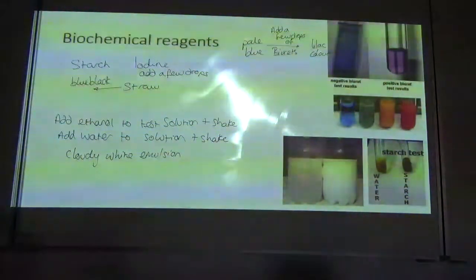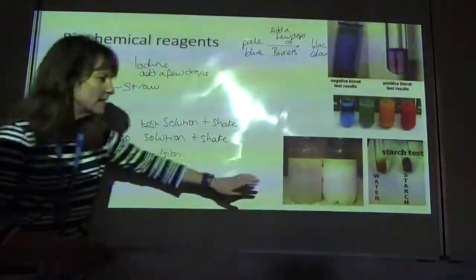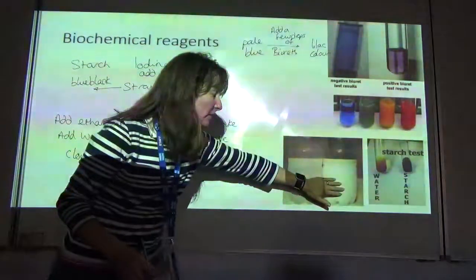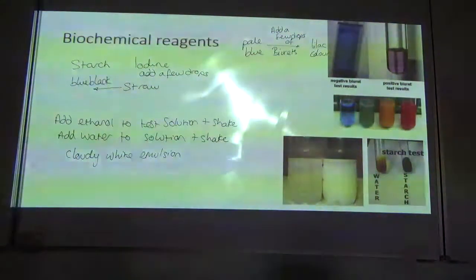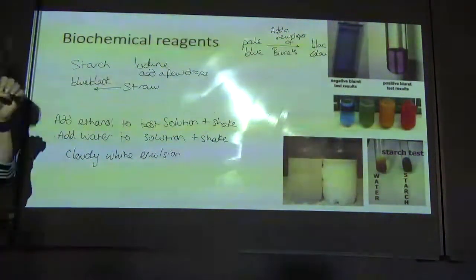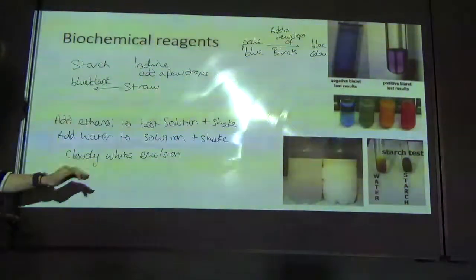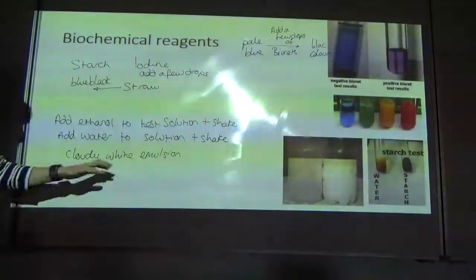So one of the problems with this test is if you're trying to test milk for lipid, then the positive result, which is a milky white color, will be exactly the same as what you're starting with. So you can't judge whether milk contains lipids using the emulsion test. So that's to add ethanol, shake, add water, shake, get a cloudy white emulsion.